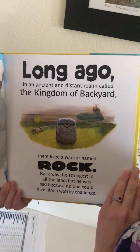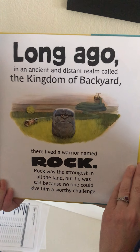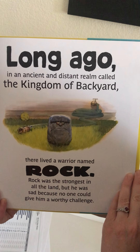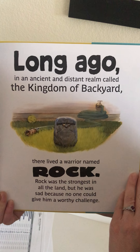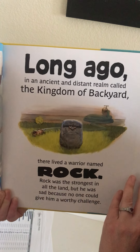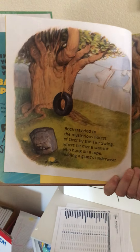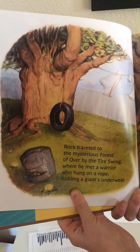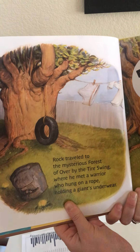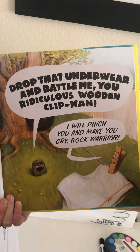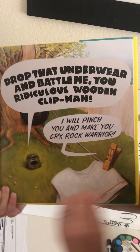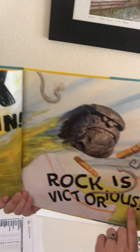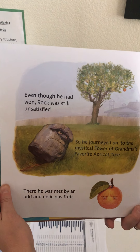Long ago in an ancient and distant realm called the Kingdom of the Backyard, there lived a warrior named Rock. Rock was the strongest in all the land, but he was sad because no one could give him a worthy challenge. Rock traveled to the mysterious forest of Over by the Tire Swing, where he met a warrior who hung on a rope holding a giant's underwear. 'Drop that underwear and battle me, you ridiculous wooden clip man.' 'I will pinch you and make you cry, rock warrior.' Rock versus clothespin. Rock is victorious. Even though he had won, Rock was still unsatisfied.